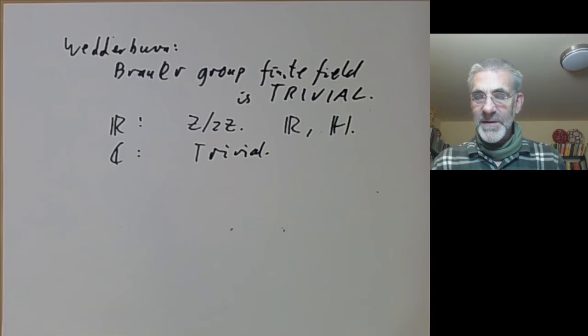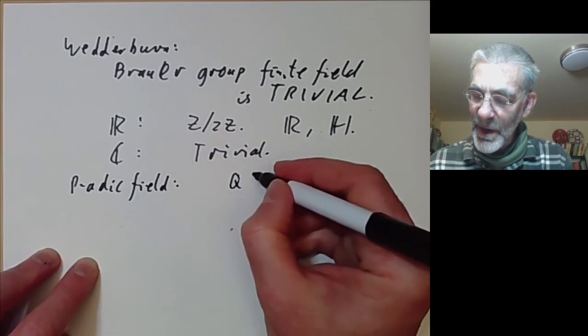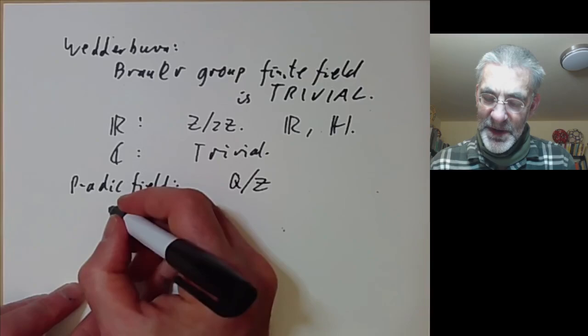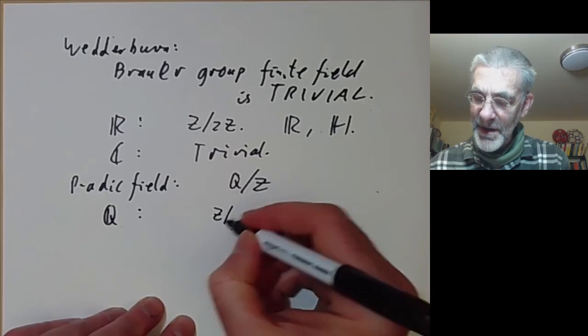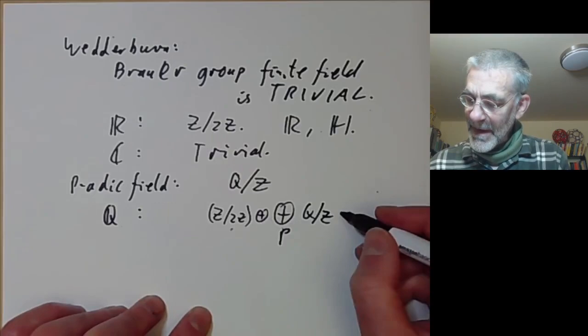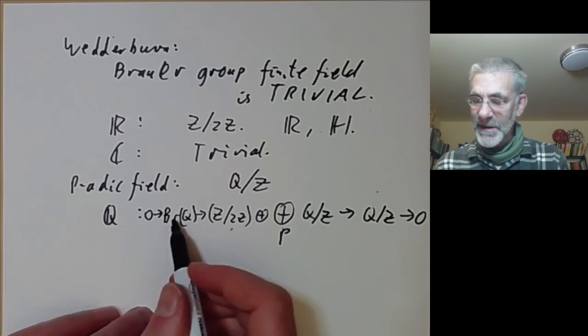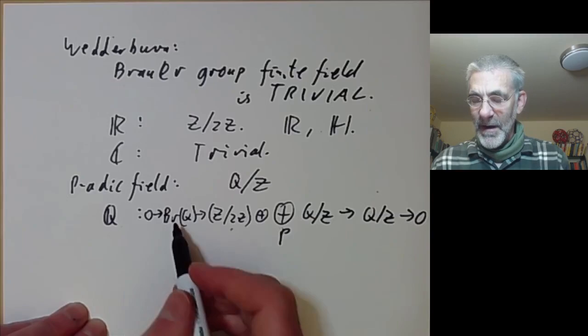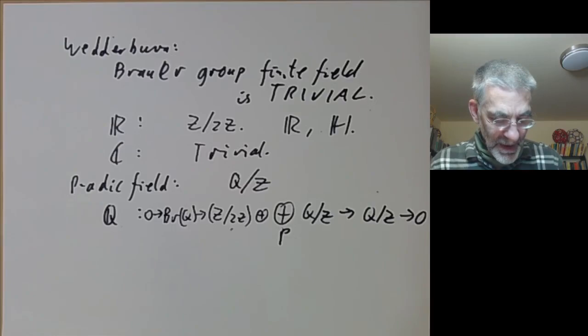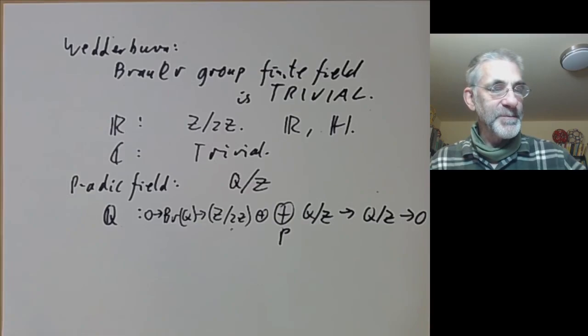For other fields, the Brouwer group is often quite difficult to calculate. For instance, if you take a p-adic field, the Brouwer group turns out to be the rational numbers modulo the integers. If you take the field of rational numbers, the Brouwer group is even more complicated. It turns out to be a group of order two, and then you take a sum over all primes of the Brouwer group of the p-adic fields, and then that maps, there's a natural map from that to Q over Z, and the Brouwer group of the rationals sits inside an exact sequence like this. So this is a basic result of class field theory. You can calculate the Brouwer group of any field of algebraic numbers. And more generally, Grothendieck even managed to extend the definition of Brouwer group to arbitrary commutative rings and even arbitrary schemes.